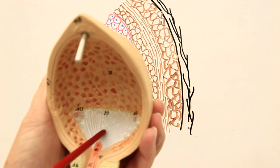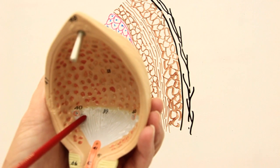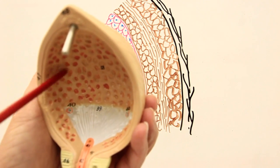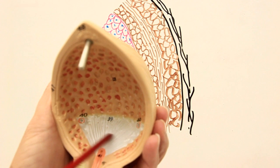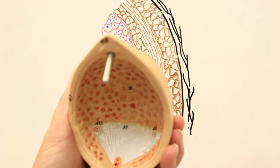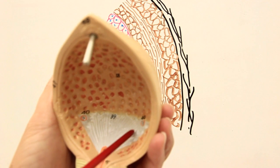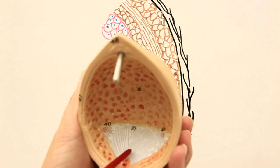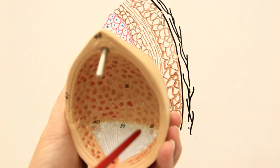So the trigone of bladder is present at the base of the bladder, inside the base of the bladder. It's the region where the mucosa or inner lining of the bladder is tightly applied over the surface of the musculature.